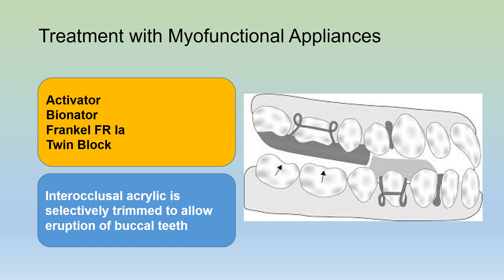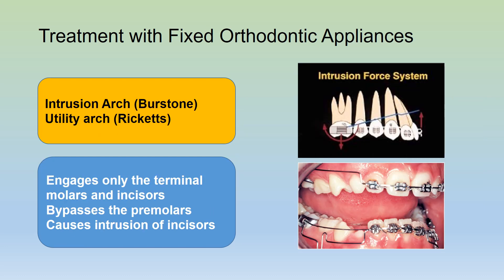Treatment can also be done using myofunctional appliances such as an activator, bionator, Fränkel function regulator 1A, or twin blocks. The interocclusal acrylic is selectively trimmed to allow eruption of the buccal teeth, and this will reduce the deep overbite anteriorly.